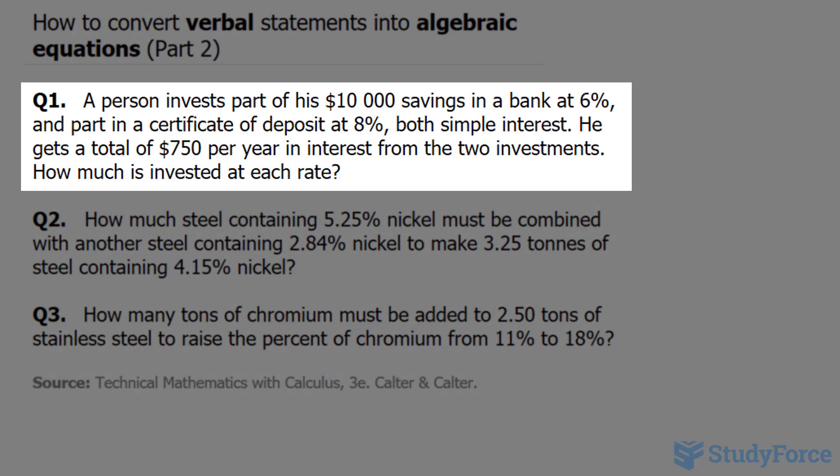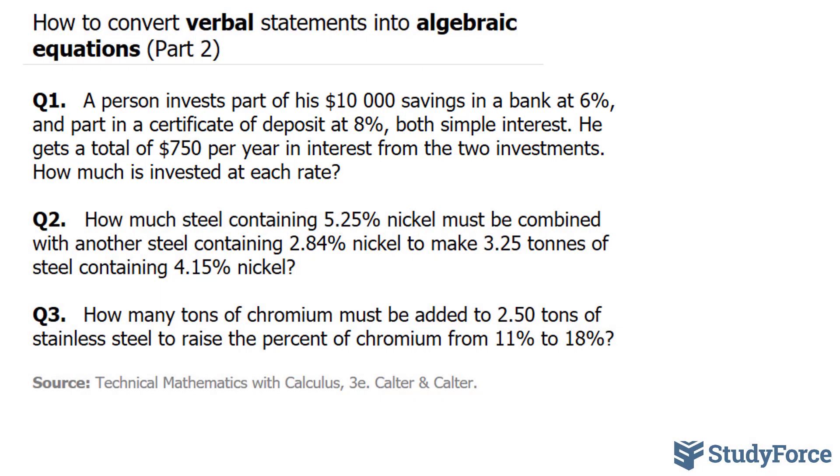The first question asks, a person invests part of his $10,000 savings in a bank at 6% and part in a certificate of deposit at 8%. He gets a total of $750 per year in interest from the two investments. How much is invested at each rate?